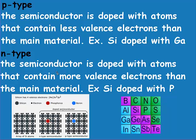N-type is when the semiconductor is doped with atoms that contain more valence electrons than the main material. If we're using silicon and dope it with nitrogen, phosphorus, or arsenic, those would be an n-type or negative-type semiconductor because they're donating electrons to the semiconductor. Phosphorus has an extra electron compared to the surrounding silicon atoms.